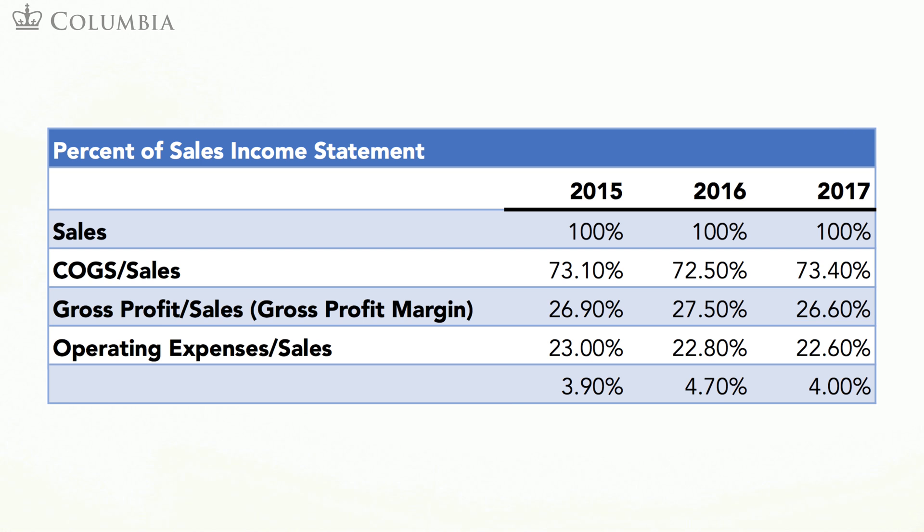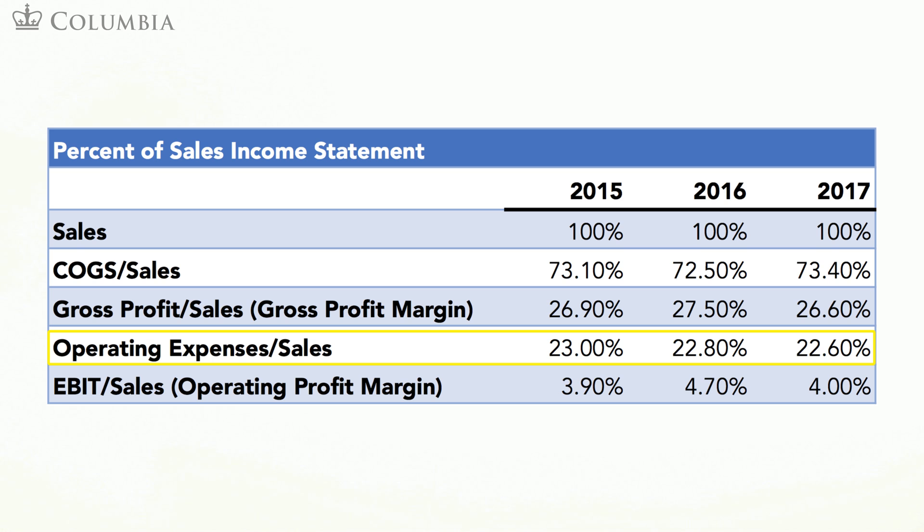The next ratio is operating expenses to sales. We will be using this ratio to project operating expenses. The last ratio is called the operating profit margin. This is defined as EBIT — that is, the earnings before interest and taxes — over sales. Alternatively, it can be computed as the gross profit margin minus the operating expenses to sales ratio.